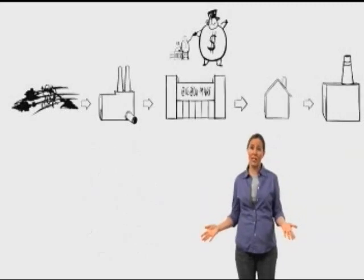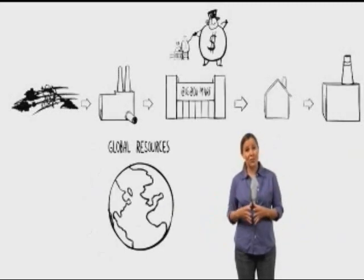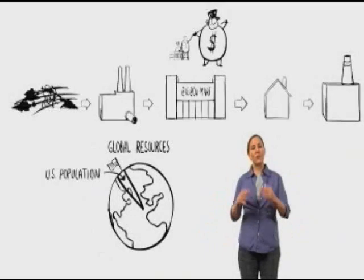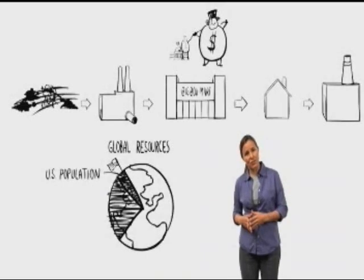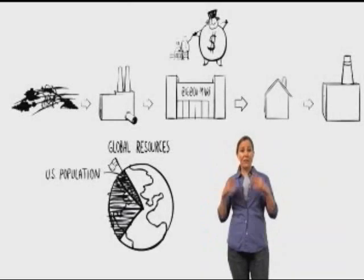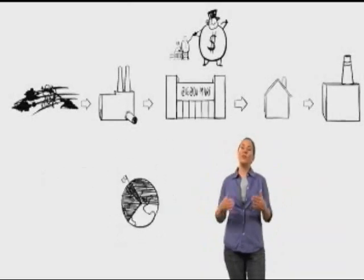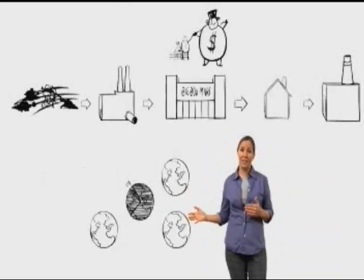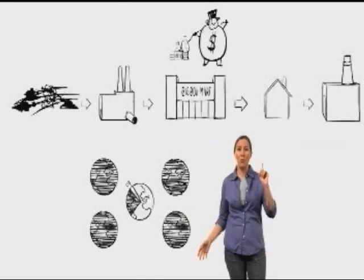And our problem is not just that we're using too much stuff, but we're using more than our share. We have 5% of the world's population, but we're using 30% of the world's resources and creating 30% of the world's waste. If everybody consumed at U.S. rates, we would need three to five planets. And you know what? We've only got one.